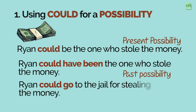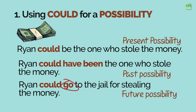'Ryan could go to jail for stealing the money.' This sentence indicates a future possibility — we are not sure but expressing a possibility. Note the verb 'go' after could; it is in its base form. When you want to express a future possibility using could, the verb that follows could will always be in its base form.